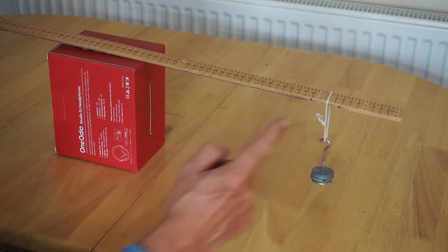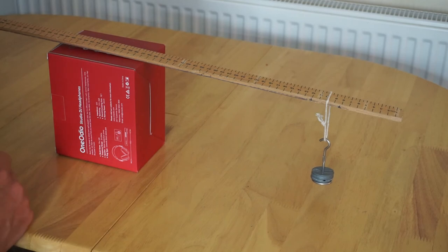And so in that position the 60 gram mass is at 10 centimeters and the edge of the box is at 36.5 centimeters.